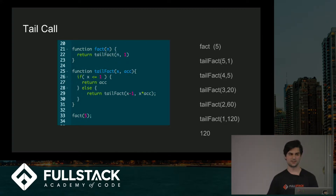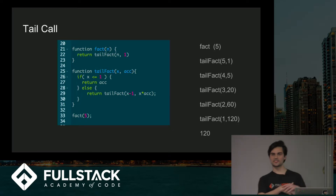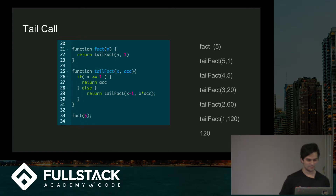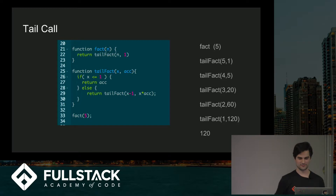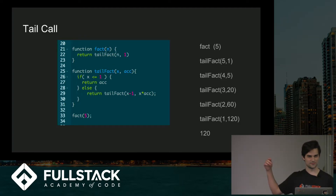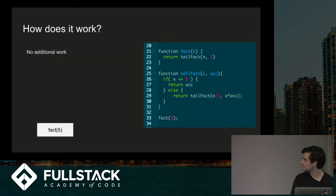When you're doing this function call, as you call the next function, you're doing that operation and passing it in. This is literally recursive, and it has some benefits when executing. How does it work? Let's talk about the benefits.